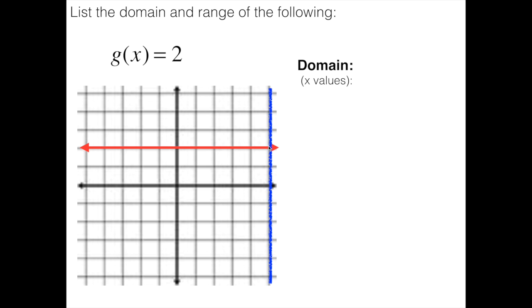So the domain on this one is negative infinity to positive infinity. And any time you use infinity, we're going to use parentheses. Now, infinity, meaning it just continues on. It hits all the x values. And we've got negative infinity, comma, positive infinity, meaning it hits everything in between these two numbers.